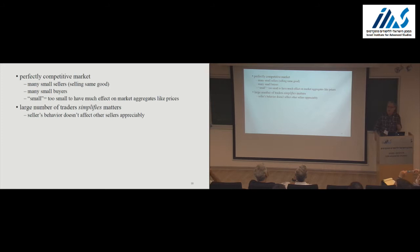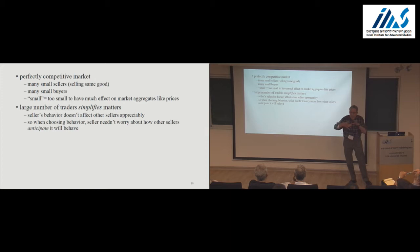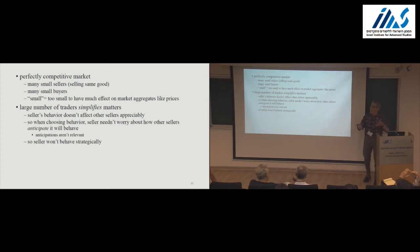You might have thought that because there are lots of agents around that the analysis is going to be very complicated, but it's actually simplified by the large numbers. Because if I'm a seller thinking about what to do, I know that my behavior is not going to affect other sellers appreciably. So when I'm choosing my behavior, I of course have to make some prediction about what they're going to do. Because I don't affect them, I don't have to think about what they're going to anticipate from me. And that means that I don't have to behave strategically.